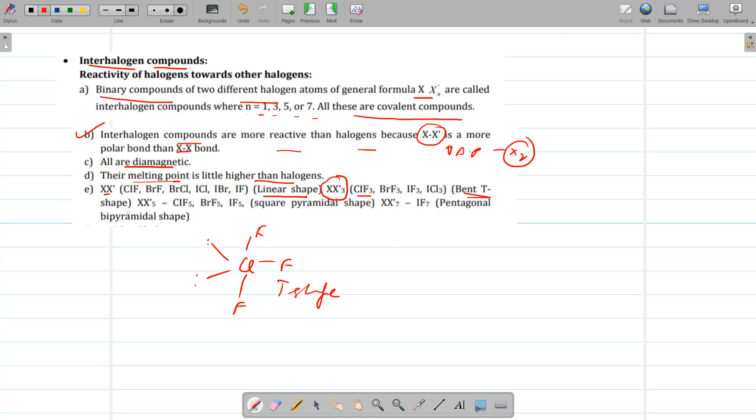Then, it is a case for XX5, for example ClF5. Now, in ClF5, chlorine is in the center and it is square pyramidal where there is one lone pair of electrons.